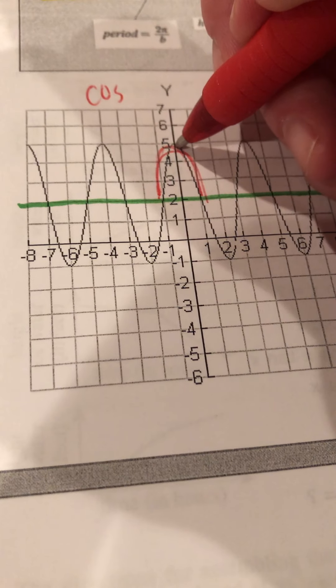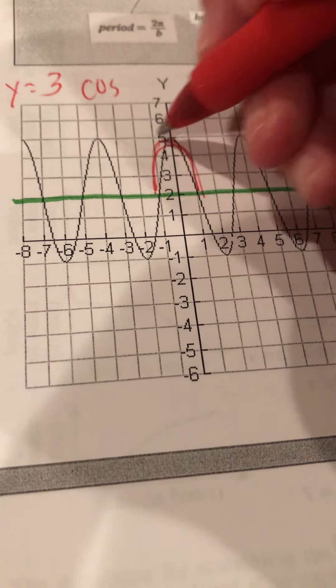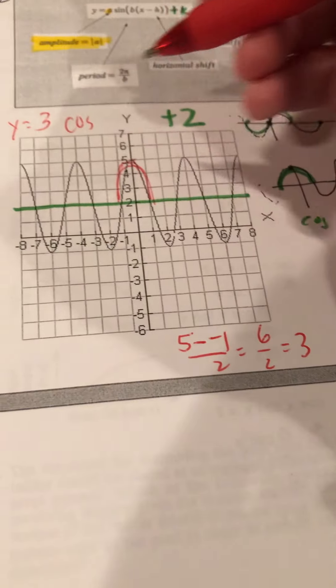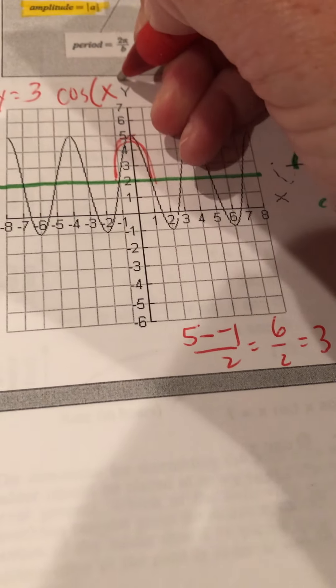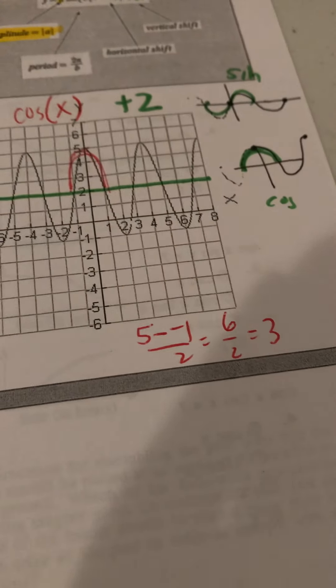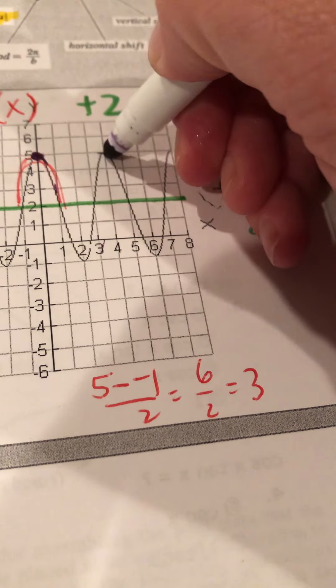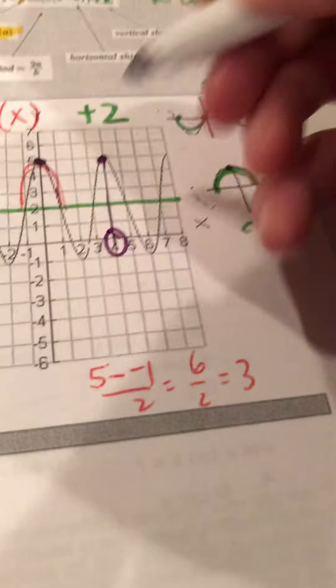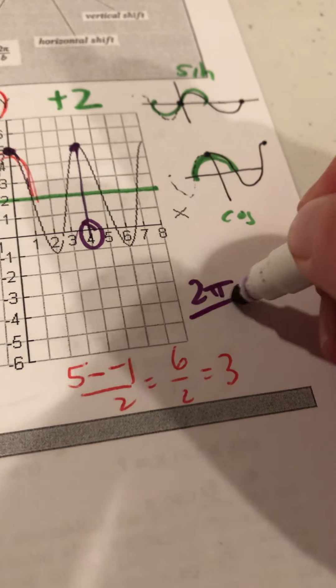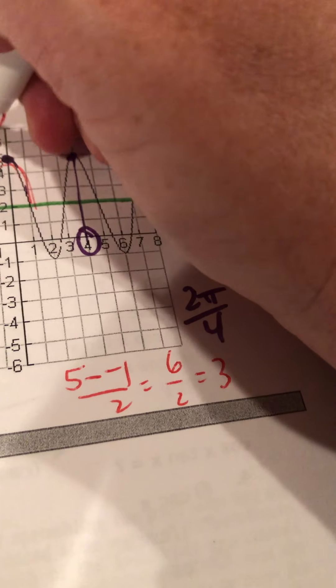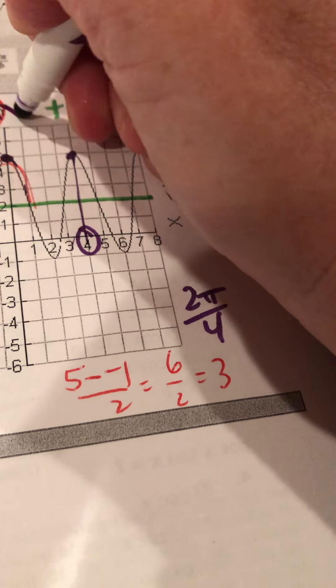The amplitude is 3 — either looking visually from midline up 3, or computing (5 - (-1))/2 = 6/2 = 3. Then for the period, the graph starts here and ends at 4. To find the period coefficient b: 2π/b = 4, so b = 2π/4 = π/2. The x-term becomes (π/2)x.